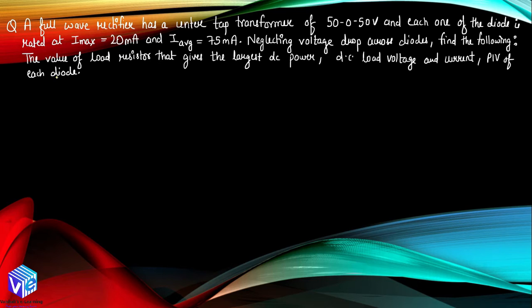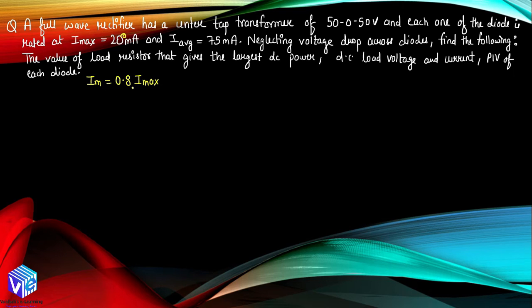For normal operation, the maximum value of current flowing through the diode must not exceed 80% of the rated current; otherwise the diode can get damaged due to excessive current and heat. So I_m will be equal to 0.8 times I_max. Taking I_max as 200 milliampere, I_m will be 0.8 into 200 milliampere, which equals 160 milliampere. This is the peak value of the current.